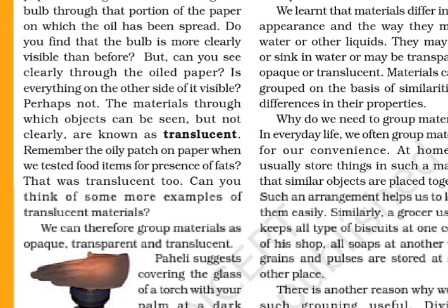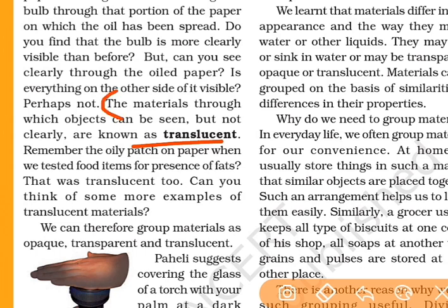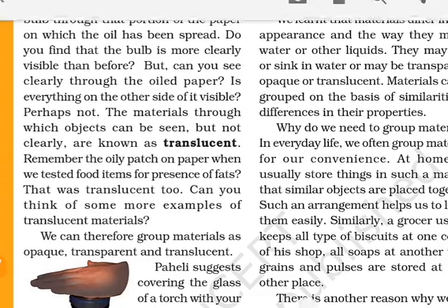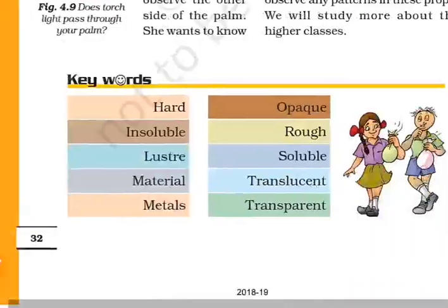Here is another example. I will use a paper — first, we will apply oil to it. Then we will use light. What do you say about this material? It is translucent material. The material through which an object can be seen, but not clearly, is called translucent material. That is the unit.